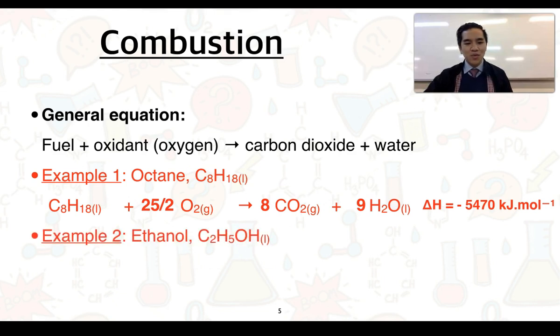For a second example, we've got ethanol, another carbon based fuel with its formula there. We can see it's a liquid at room temperature, so we're just going to write out its unbalanced equation first. We need to balance this in very much the same way, so firstly balancing the carbons. We would need two CO2s on the right. Follow that with balancing the hydrogens.